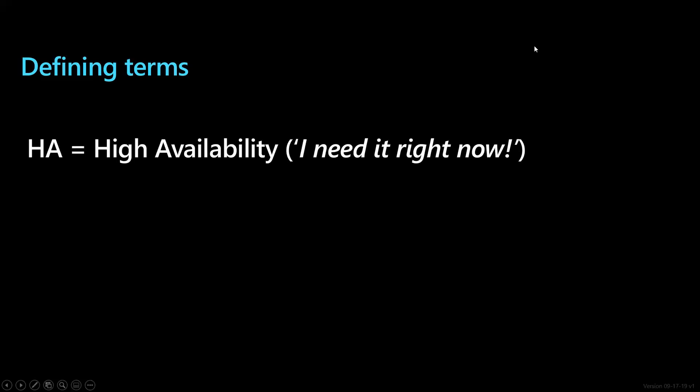Let's define a few terms — sorry if you know this already, you can skip ahead. HA, high availability, means I need it right now. If your application is well-written, even if the database goes down, the high availability replica comes up a few seconds later and the application retries. Users should not notice, or notice very little. So high availability means you have a hot standby typically in the same data center — we're talking seconds.